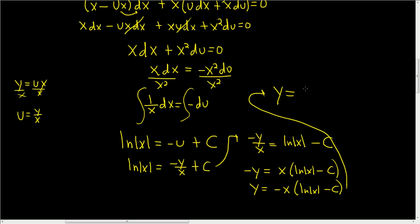So you end up with y equals x times negative 1 times this guy. It's going to make this negative, and then the c will become positive. So it's going to be positive c minus natural log of absolute value of x. And that is the final answer. I hope that helps.